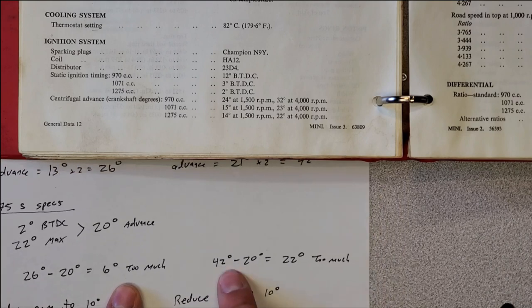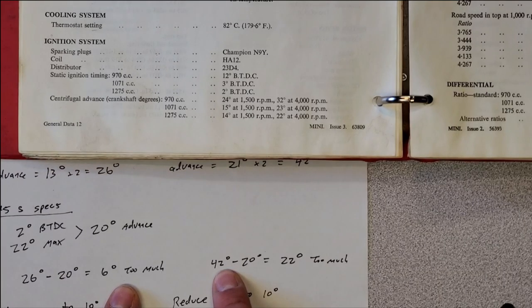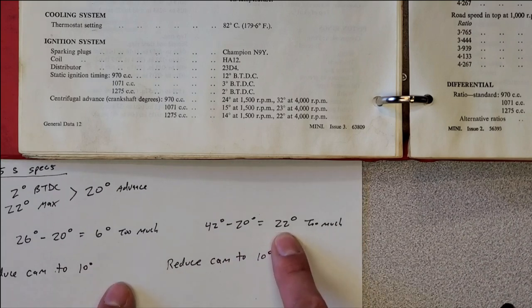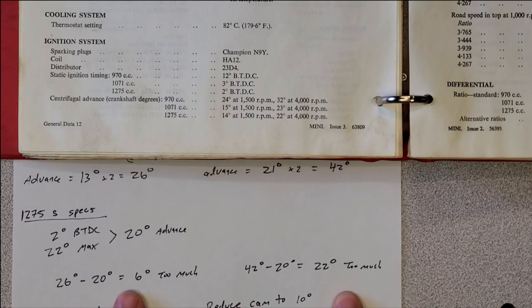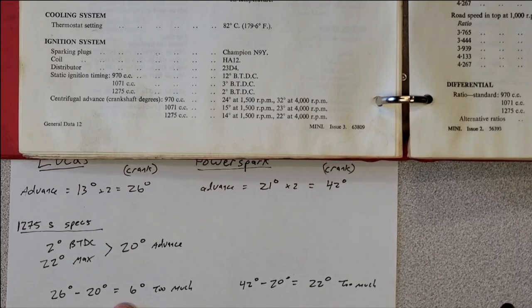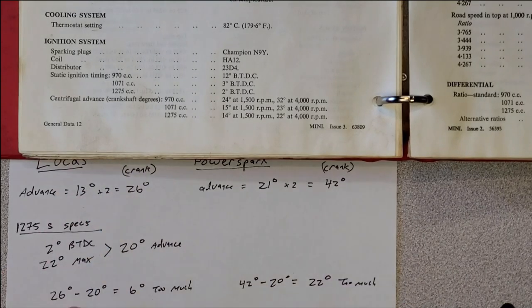Now, the PowerSpark unit had 42 to start with. We need to take out 22 degrees of cam motion. And again, the only way to do that is by adding material to the cam. So that just gives you an idea of how far off these units are from factory specifications.